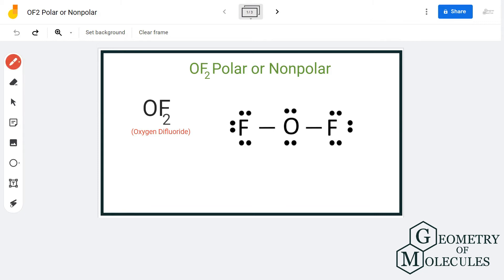Fluorine atom has an electronegativity value of 3.98 and for oxygen it is 3.44. If we calculate the difference, it is higher than 0.5, which makes these bonds polar.